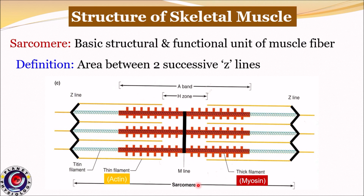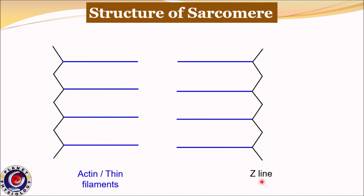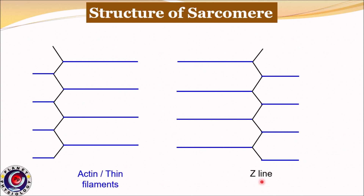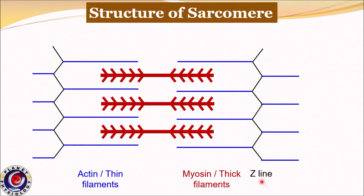Sarcomere is the basic contractile unit of muscle fibers. Let us understand the structure of sarcomere with the help of a diagram. These two zigzag lines represent Z-lines. Attached to Z-lines are thin filaments, that is actin filaments, on both sides. In between the actin filaments are myosin filaments or thick filaments, as indicated by the thick red lines. These myosin filaments have projections protruding out from them, called cross bridges. Cross bridges are always directed towards the Z-line, and hence there are no cross bridges in the central part of the myosin filament.